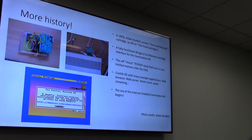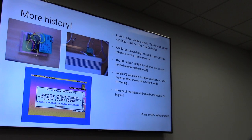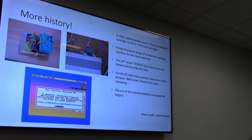A bit more history: Adam Dunkels, back in 2002, created the Final Ethernet cartridge — the name was a riff on the Final Cartridge utility for the 64. This was part of his PhD thesis. He made a fully functional Ethernet cartridge design for the 64 and invented the micro-IP stack — a TCP/IP stack that crams into just a few tens of kilobytes. To demonstrate it, he wrote the Contiki operating system running on the Commodore 64, which had a web browser, web server, telnet, and audio streaming — all running on the 64 — and that began the era of the internet-enabled Commodore 64.